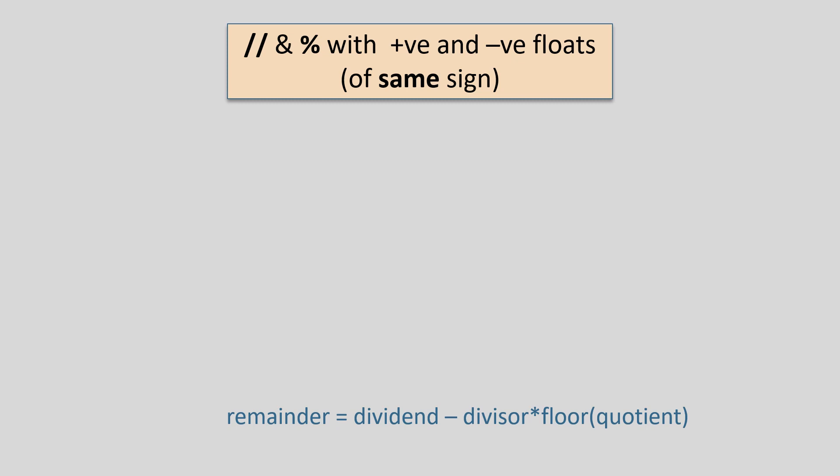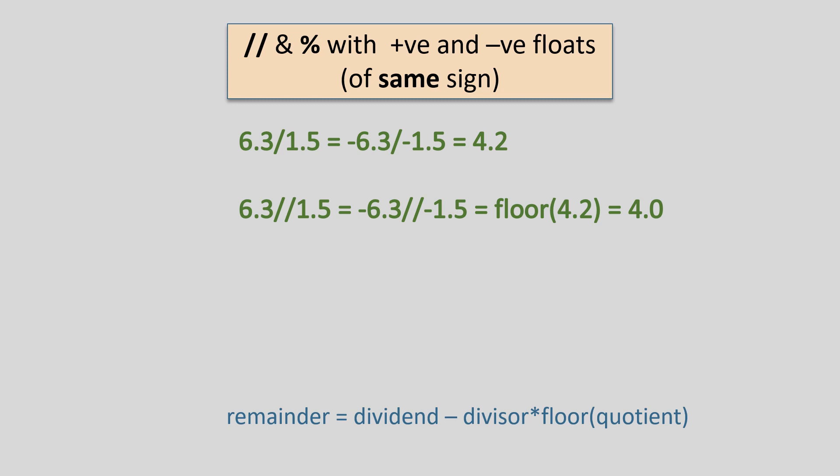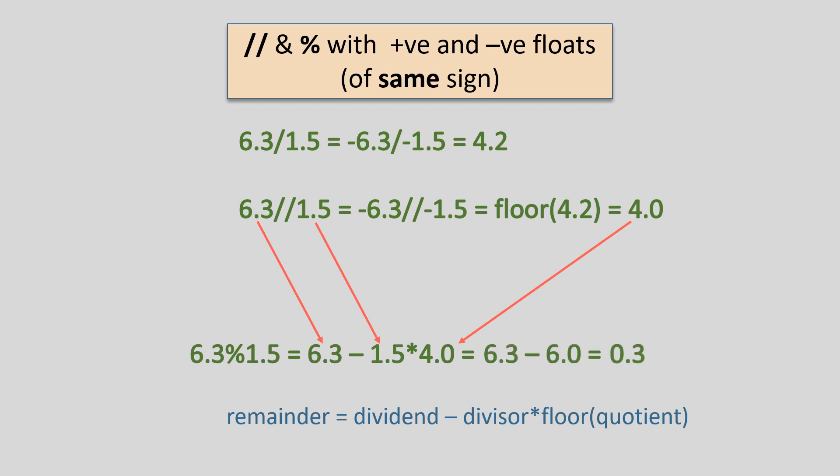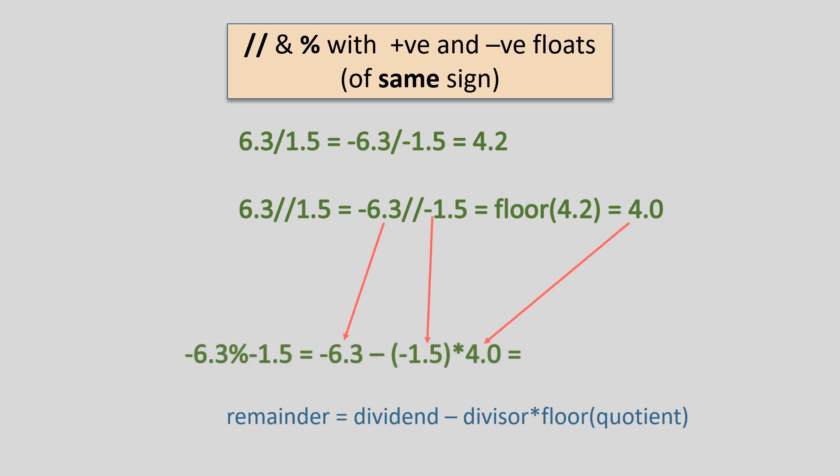Exactly the same thing happens when the operands are floating point numbers or a mix of integers and floats. The only thing to remember is that floor division always gives the floor of the quotient, and the remainder is obtained by the formula: remainder = dividend minus divisor multiplied by floor of quotient. For example, if the operands are 6.3 and 1.5, both positive or negative, division returns the quotient 4.2 and floor division returns the floor of that, which is 4. If both are positive, the remainder is 6.3 minus 1.5 times 4.0, which is 0.3. If both are negative, the remainder is minus 6.3 minus minus 1.5 times 4.0, which is minus 0.3.